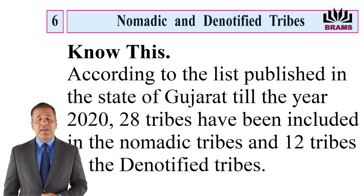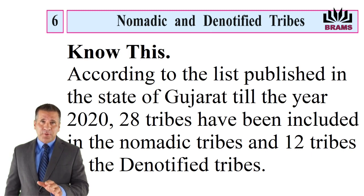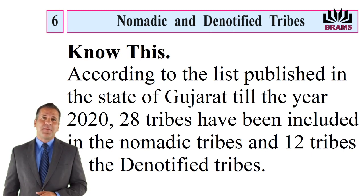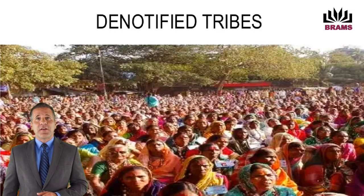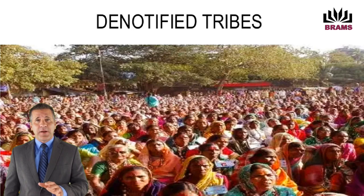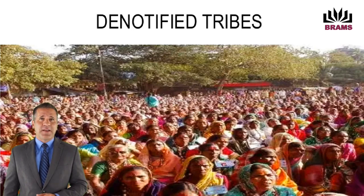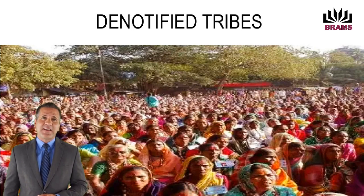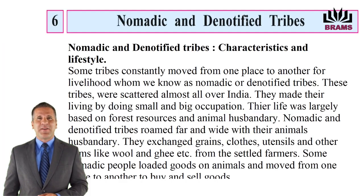Know this: According to the list published in the state of Gujarat till the year 2020, 28 tribes have been included in the nomadic tribes and 12 tribes in the denotified tribes. Gujarat Rajya में वर्ष 2020 तक घोषित सूची के अनुसार विचरती जाति में 28 जातियों और विमुक्त जाति में 12 जातियों का समावेश किया गया है.